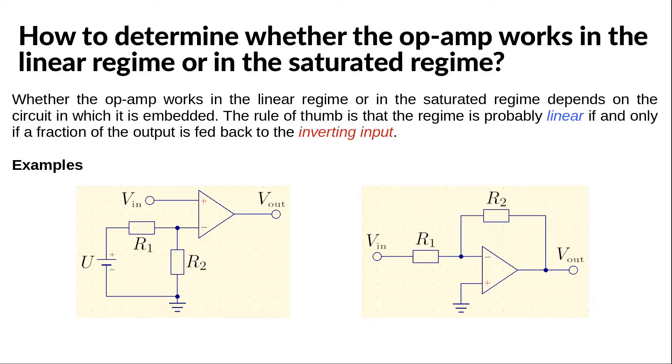The rule of thumb is that the regime is probably linear if and only if part of the output voltage is fed back to the inverting input. Let us explain why with the two following examples.